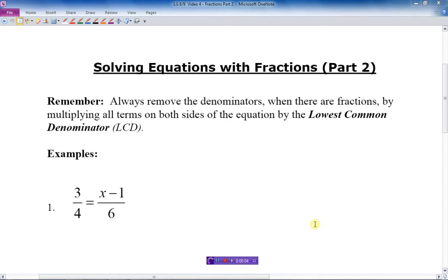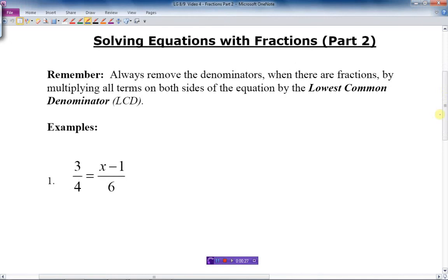Solving Equations with Fractions Part 2. As mentioned in Part 1, when we're dealing with multiple fractions, we want to remove the denominators by multiplying all the terms in the equation by the lowest common denominator. Because the lowest common denominator is the smallest number that all the denominators will divide into evenly, and that's what we want to do. We want to get rid of them. So let's take a look at these very few examples here, and just model the process.